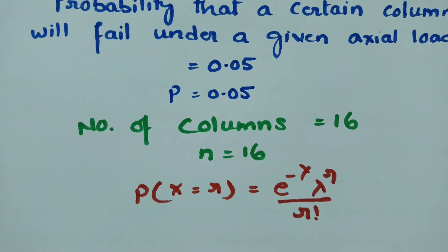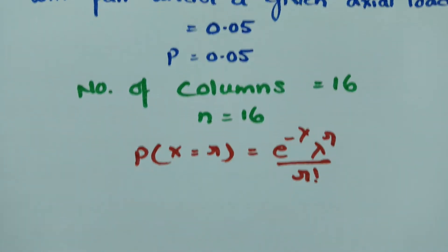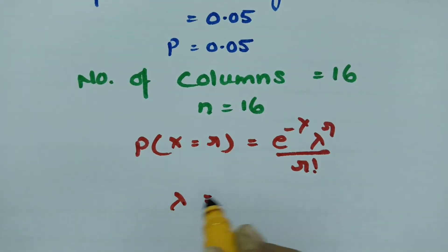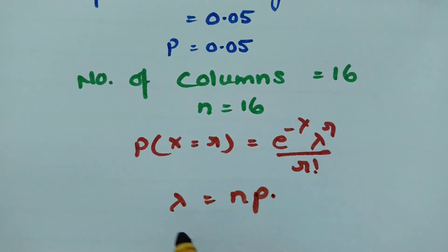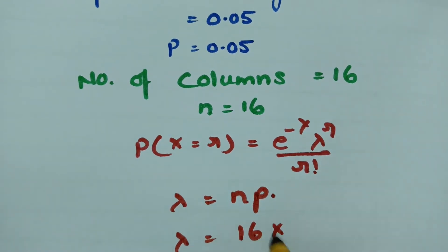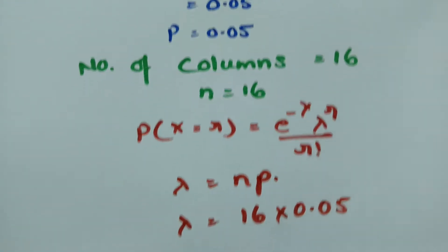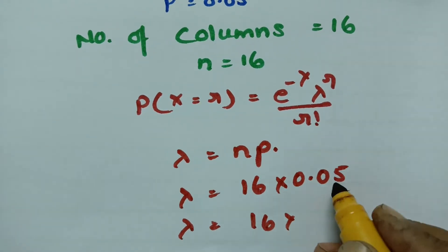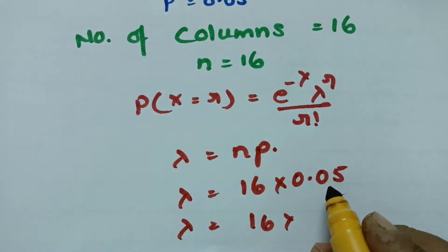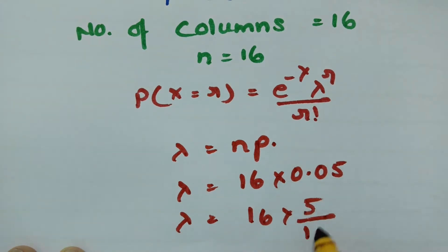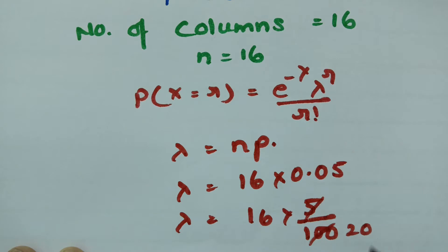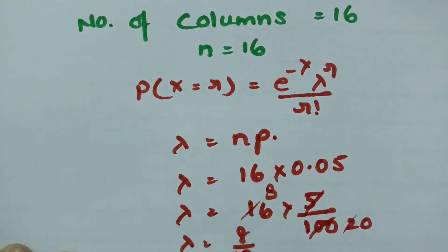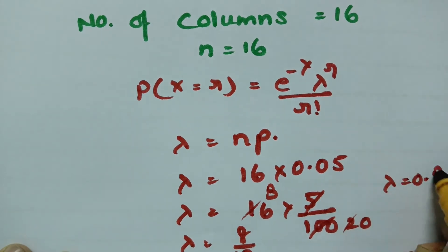Since P and n are given, we find the lambda value. Lambda mean is equal to n into P. Lambda is equal to 16 into 0.05, which is 16 into 5 by 100. Cancelling, this gives 8 by 10, so lambda is equal to 0.8.